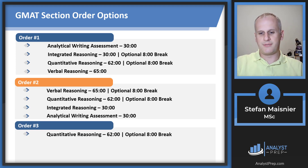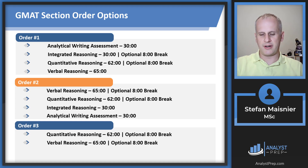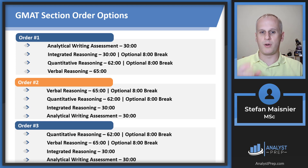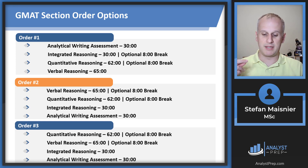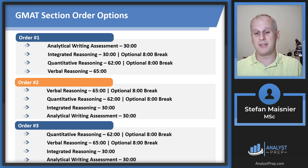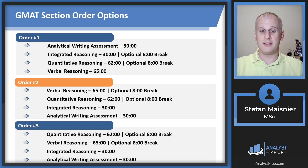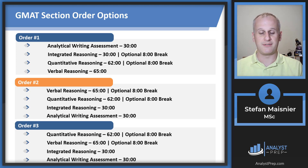Order number three is quantitative first, followed by the optional eight-minute break, then verbal reasoning, another optional break, then IR and the analytical writing assessment. There is no definitive answer as to which order is preferable — it comes down to personal preference. The main consideration is whether you like to begin with what you believe is the most important section, or prefer warming up with a section you're better at, or using the AWA and IR as a low-impact warm-up since those sections don't factor into the 800-point score.